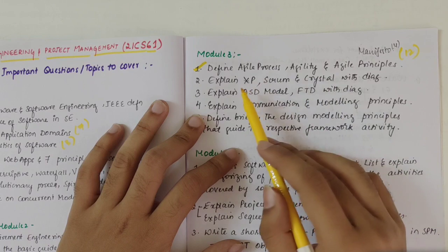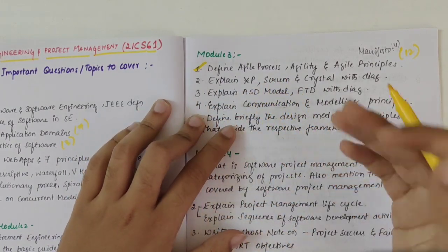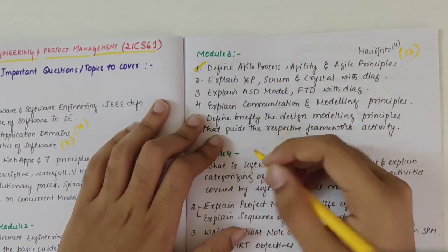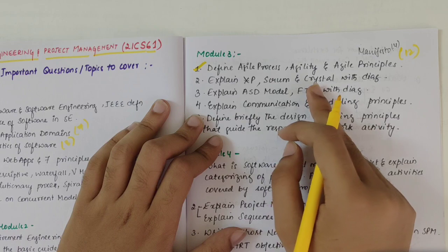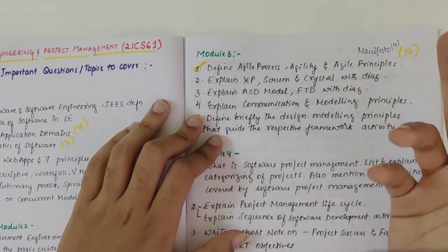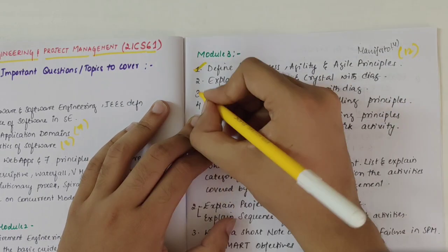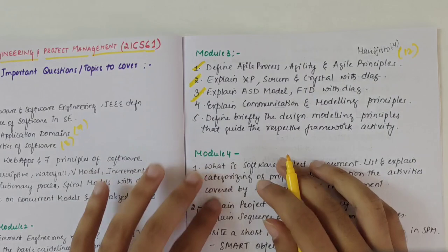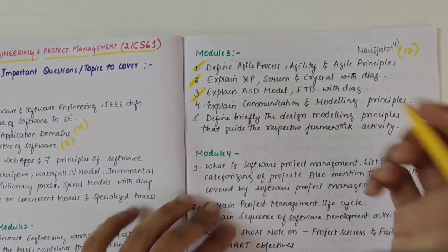Then we have explain XP. XP in itself is a 10 mark question or they can ask scrum and crystal with diagram - this is 5-5 marks. Then we have ASD model and FTD model. This is again pretty important.